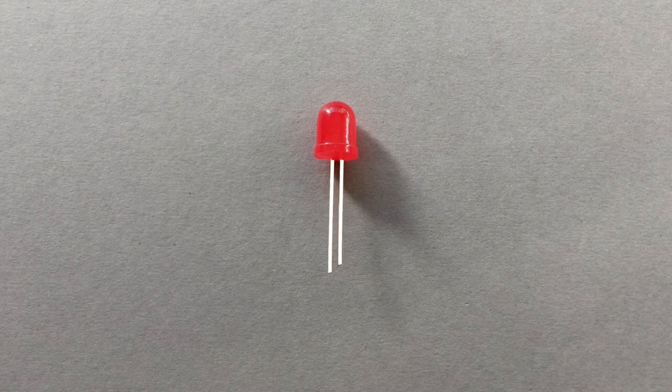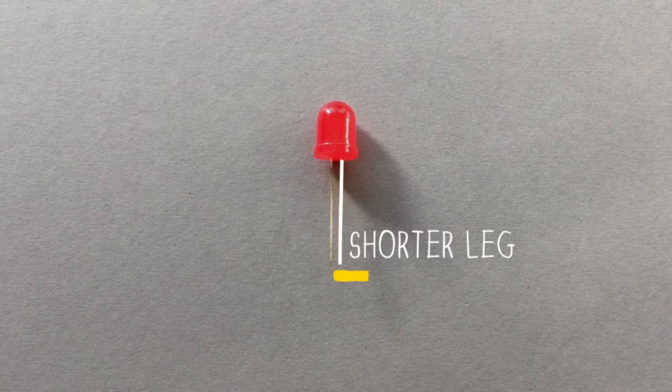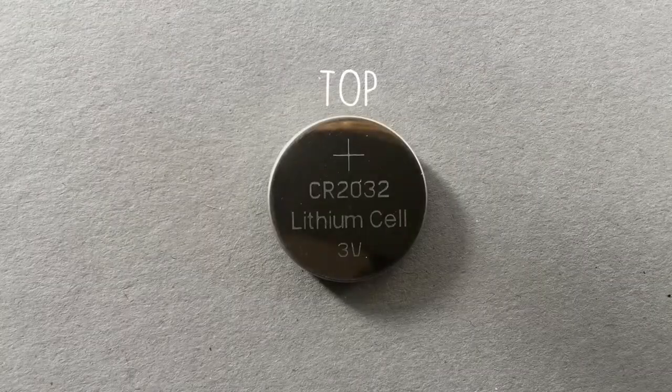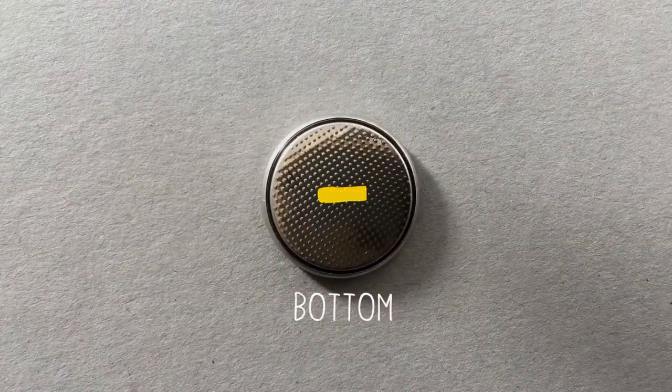The LED light has two legs. The longer leg is the plus pole, the shorter one is the minus pole. The top side of the battery is the plus pole, the bottom side is the minus pole.